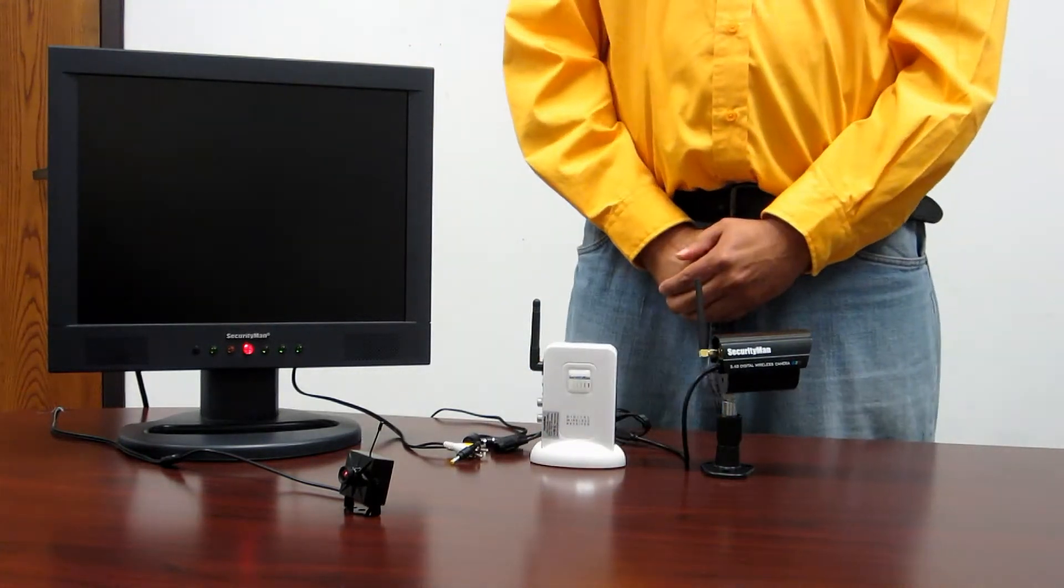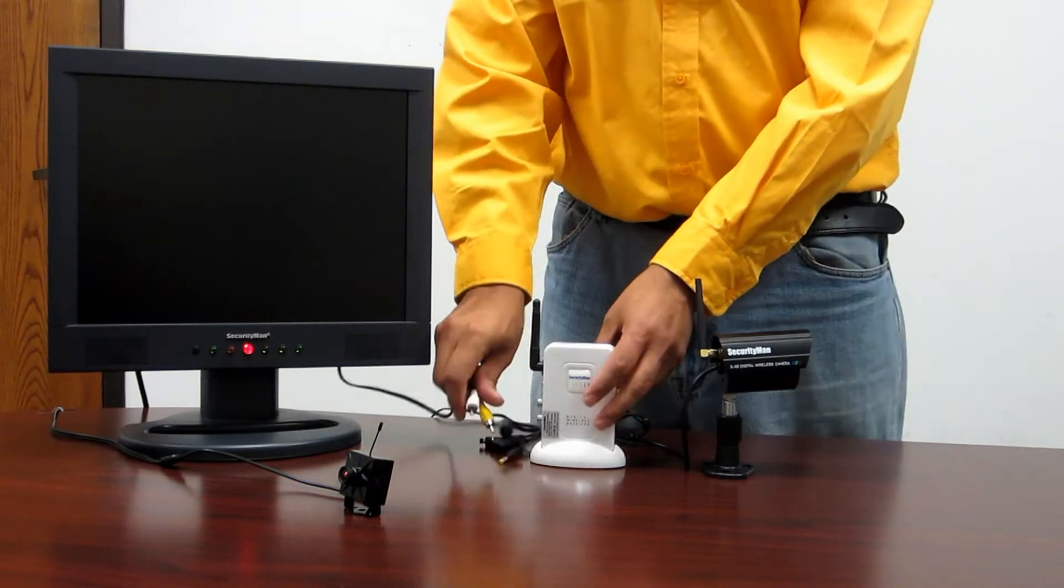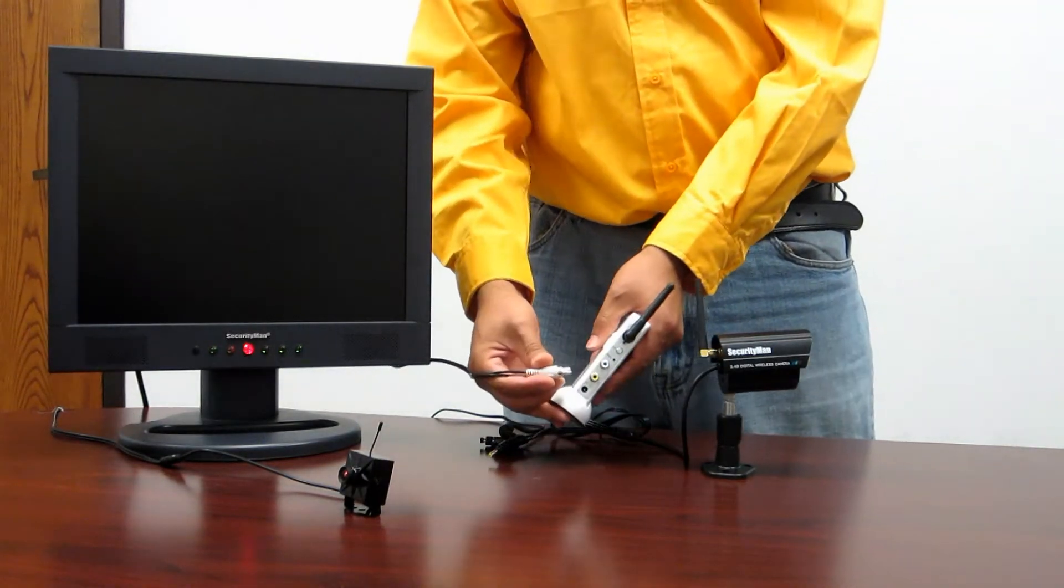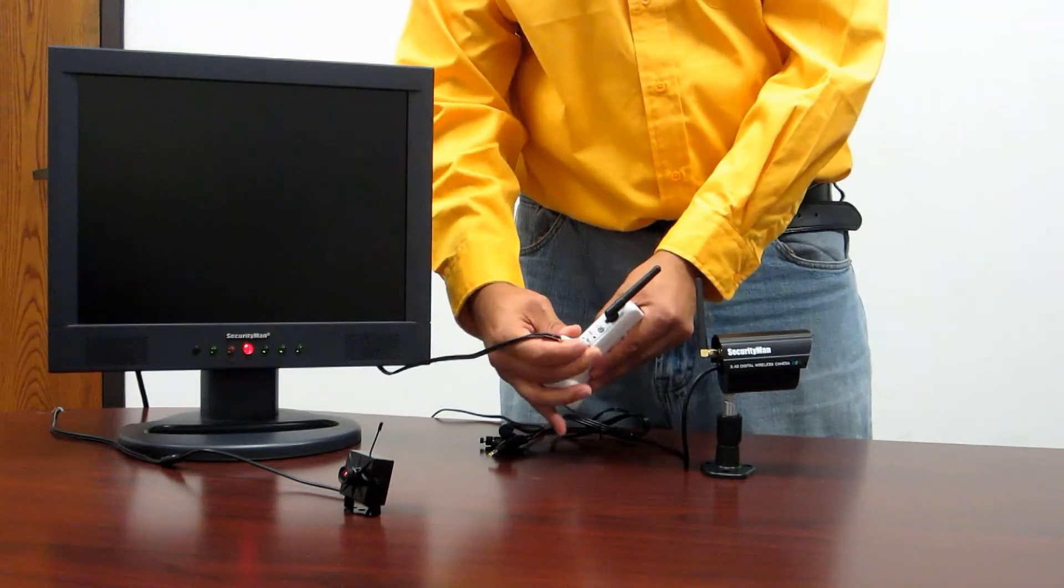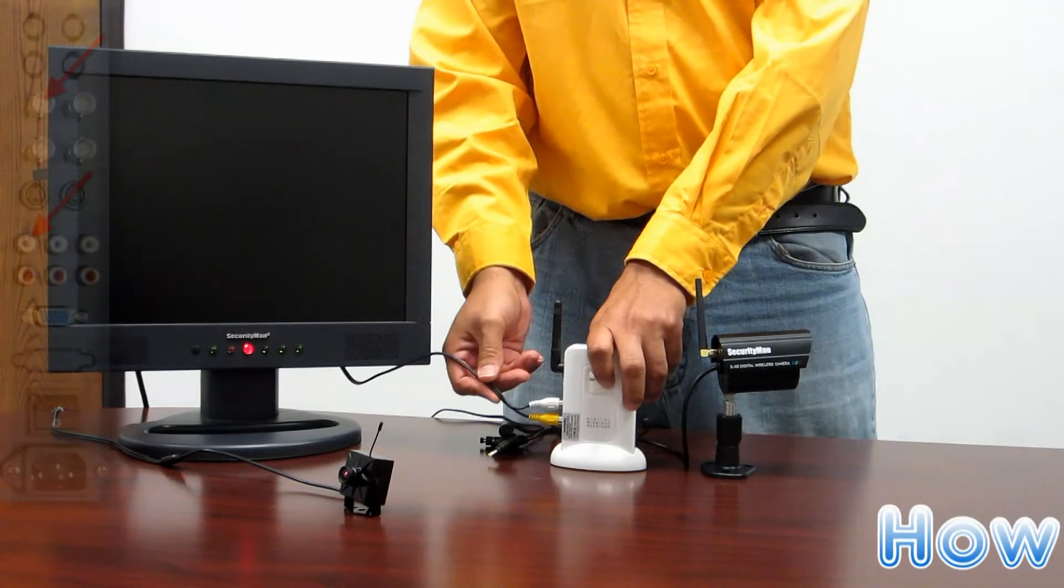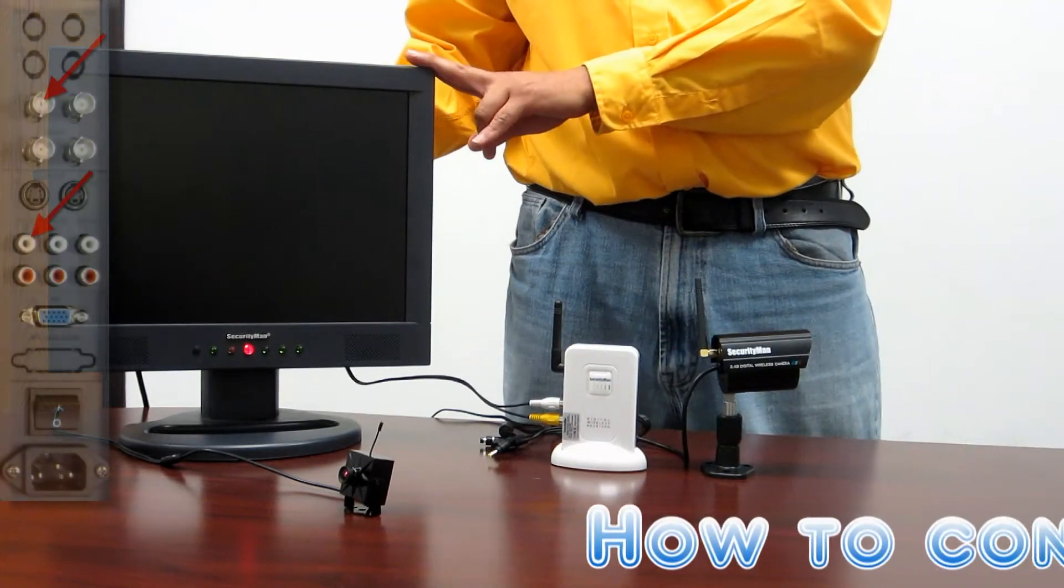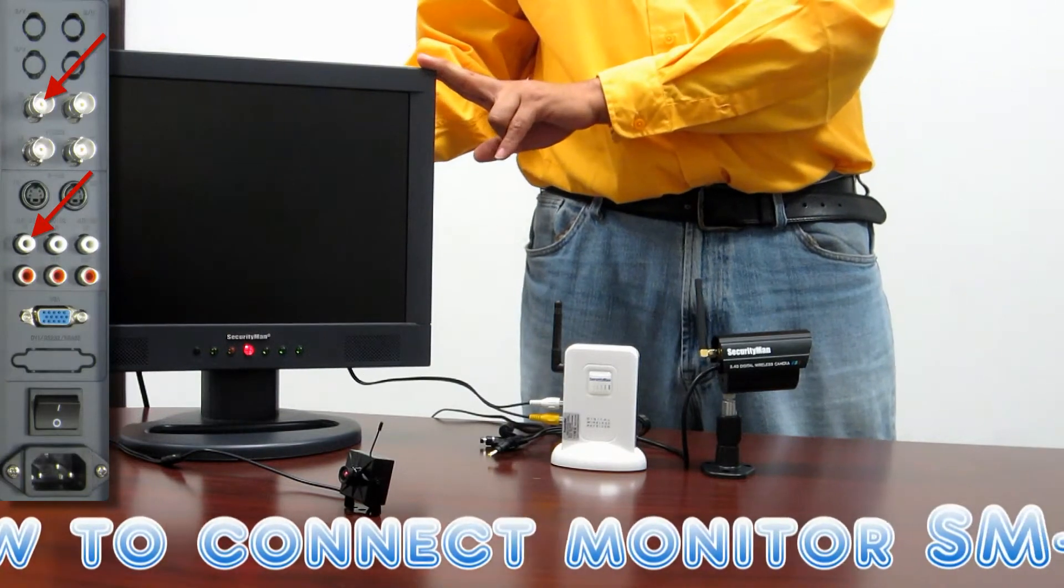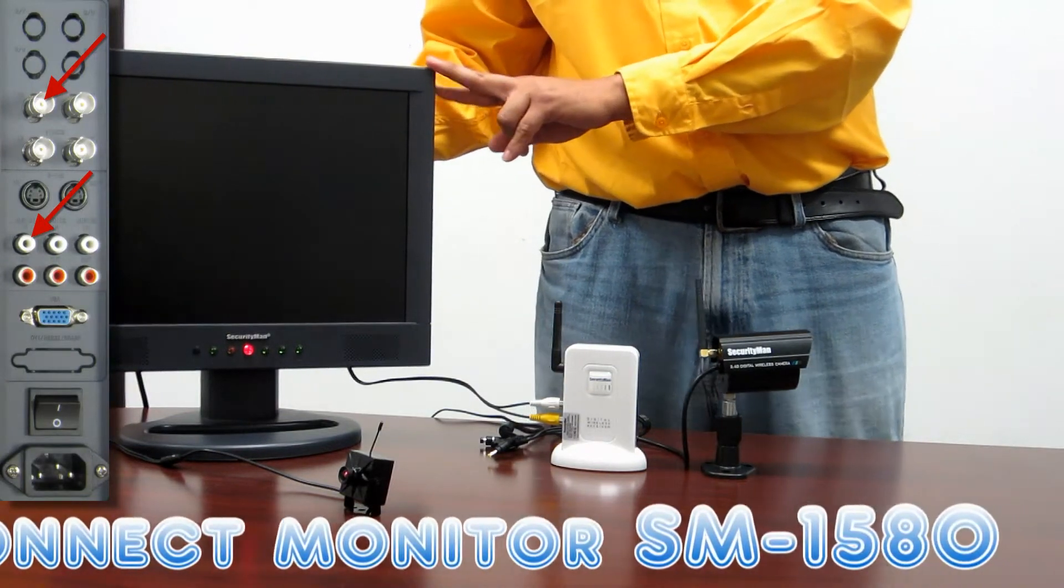To get started, the first thing you want to do is get the audio video cables that were provided and connect them to the side of your receiver. Get the remaining end of these cables and plug those into the back or front of your TV or monitor being used. Make sure you match the color coding, yellow for video, white for audio.